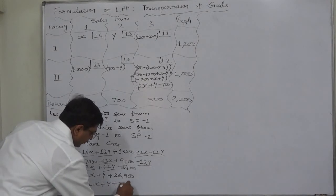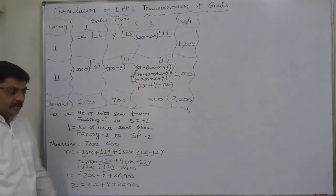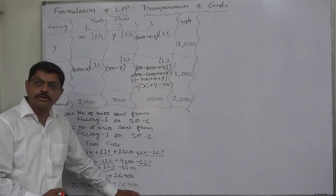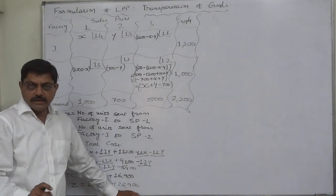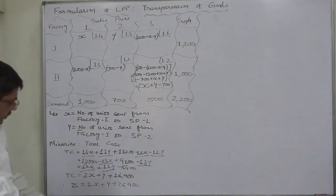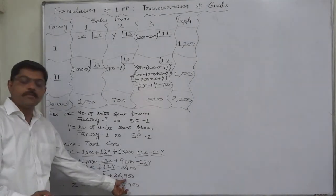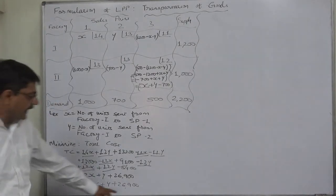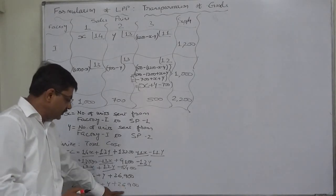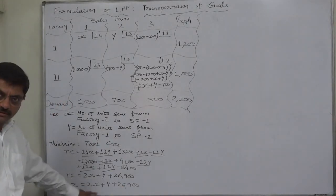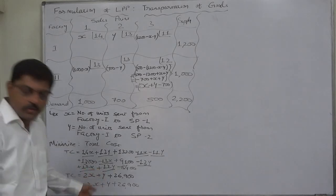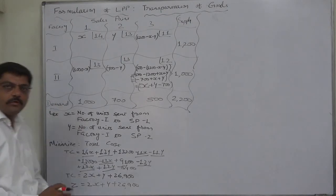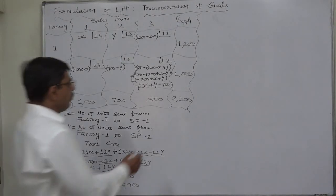The z function is z = 2x + y + 26900. Don't get confused by the constant value 26900 in the z function. If you want to solve this problem through the simplex method, just ignore this constant when setting up the simplex table — only at the end of the solution do you add 26900 to the value of z. In case of graphic method, there is no problem whether z function has a constant value or not.